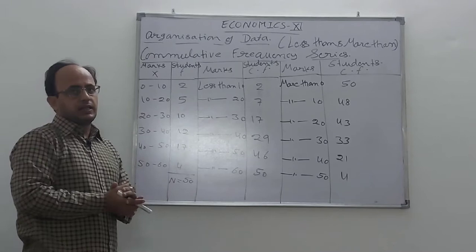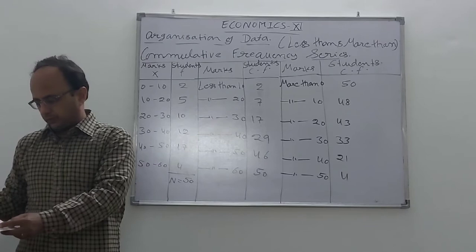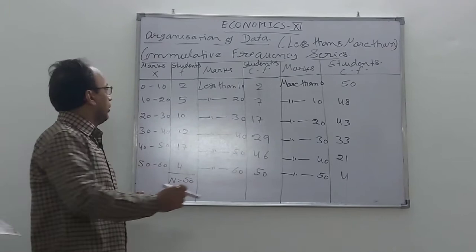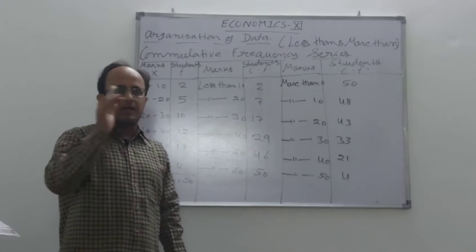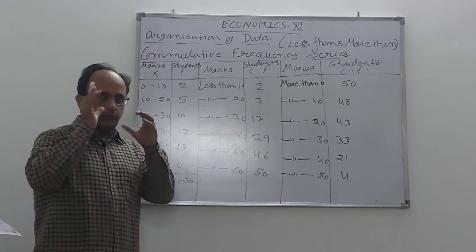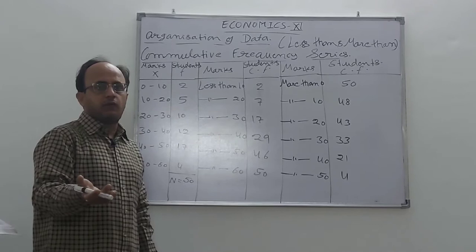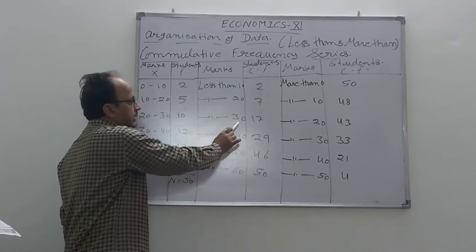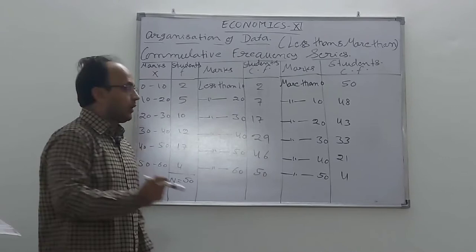First we take the less than series. In the less than series, we arrange data according to less than values. When we make this series, we write less than 10, less than 20, less than 30, less than 40, less than 50, and less than 60. Please remember, we write the upper (L2) values as the less than values.